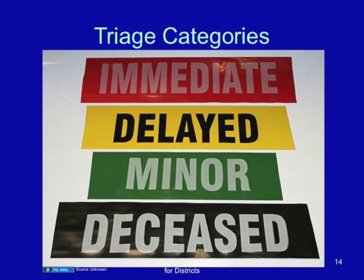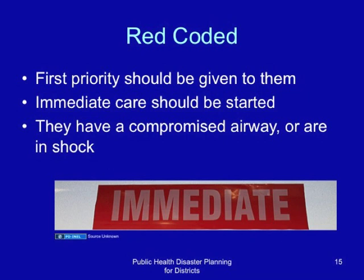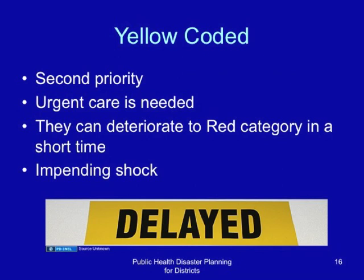The red coding are the first priority at the mass casualty incident site. Immediate care should be rendered — they have a compromised airway or are in shock and need immediate resuscitation. The yellow coded are the second priority. Urgent care is needed; they can deteriorate to the red category in a short time, as they are in impending shock.